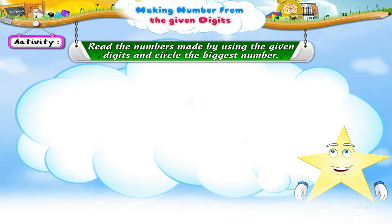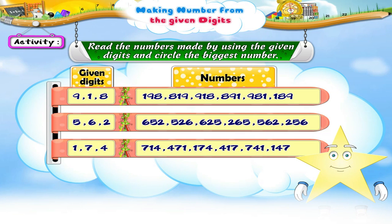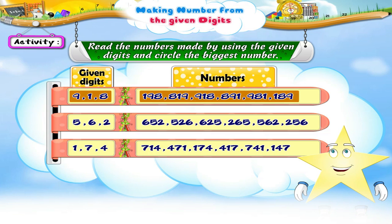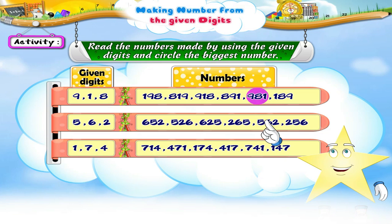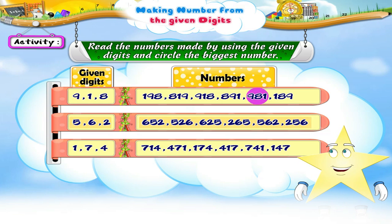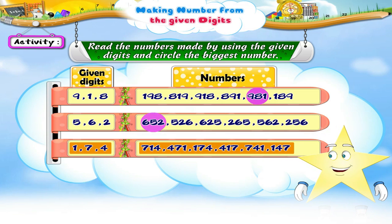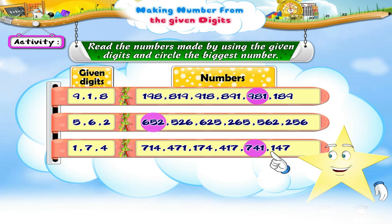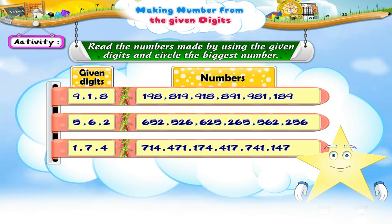Let us do another activity. Read the numbers made by using the given digits and circle the biggest number. In the first set of numbers, the biggest number is nine hundred and eighty-one. In the second set, six hundred and fifty-two. In the third set of numbers, the biggest number is seven hundred and forty-one.